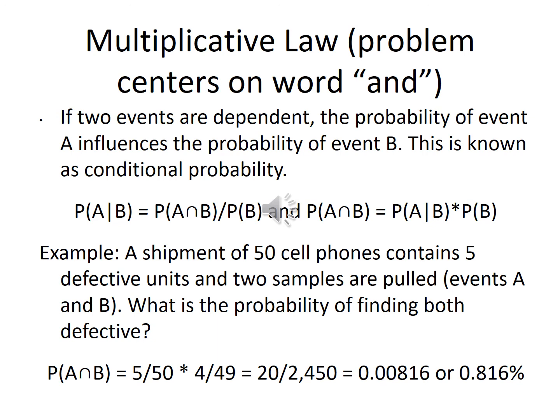For example: a shipment of 50 cell phones contains 5 defective units, and two samples are pulled (event A and event B). What's the probability of finding both defective? Plugging into the formula, we find that probability is 0.00816 — less than one percent. The math can seem complex because mathematicians tend to make things hard, but the goal is to make it easier.